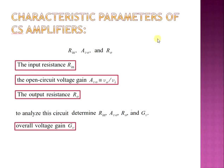The main characteristics of the common source amplifiers are: the input resistance represented as Rin, the open circuit voltage gain AV0, and the output resistance R0. If we want to analyze any circuit, we need to determine along with these three parameters the overall voltage gain, which is denoted as GV.